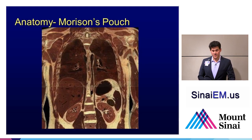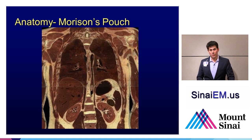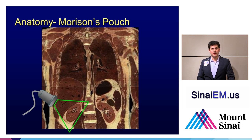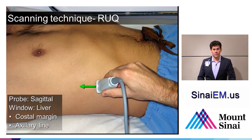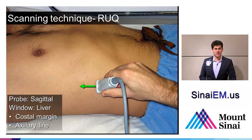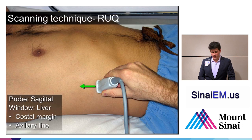Looking in the right upper quadrant at Morrison's pouch, we want to focus on this coronal view. We're going to hold the probe with the probe marker facing up towards the patient's head, using the liver as a window to scan in essentially a coronal or sagittal plane up towards the patient's head. We should see the liver and the kidney. People use the liver as a window, placing the probe at the costal margin, typically somewhere around the anterior axillary line. Anywhere from the anterior to the posterior axillary line along the right side can give you the best window.